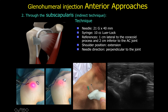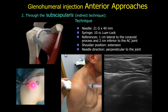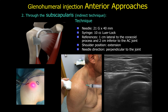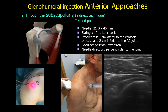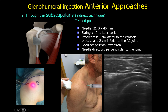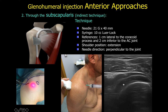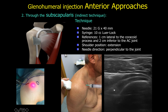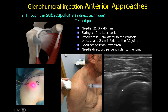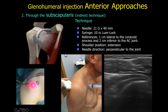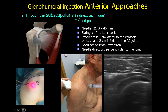With the anterior approach, ultrasound can only be used to mark the joint position — lateral to the coracoid process — by placing the needle between the skin and the transducer. During injection, the needle is directed two to three centimeters perpendicular into the joint depth. Additionally, a posterior ultrasound control can confirm correct placement by monitoring distension of the posterior joint space while injecting.